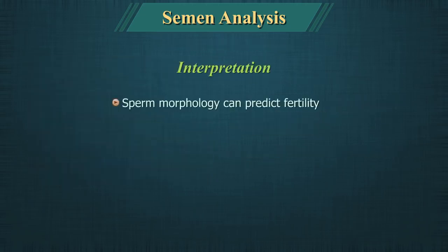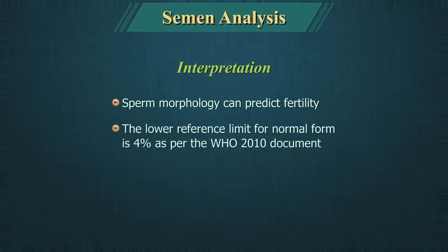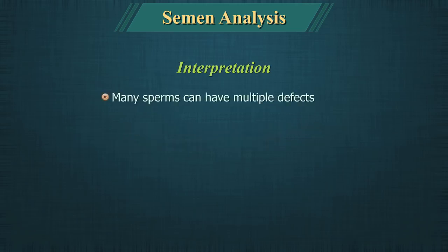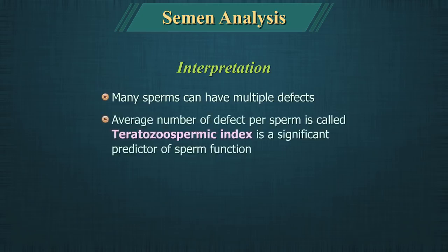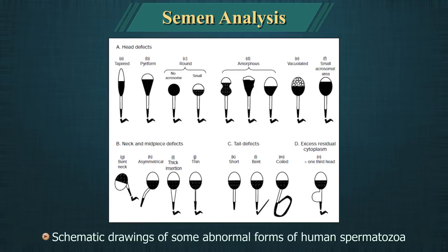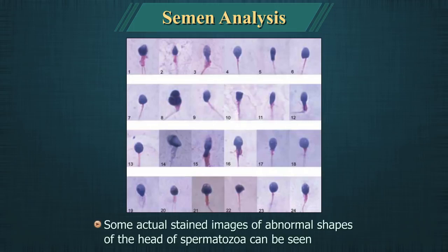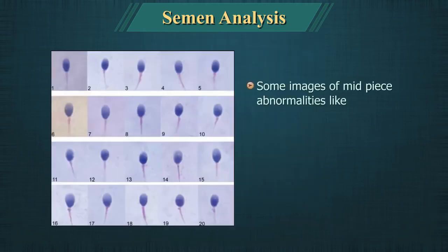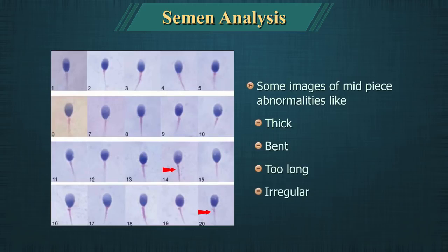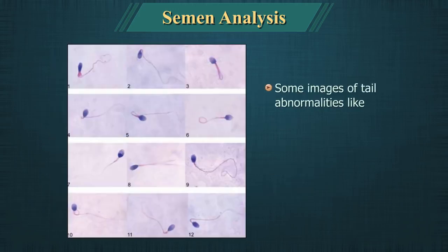The head should be smooth, regularly contoured and generally oval in shape. The mid-piece should be slender, regular and about the same length as the sperm head, with its major axis aligned with the major axis of the sperm head. The tail should be single, thinner than the mid-piece and approximately 10 times the head in length. The stained slide should be retained for 1 week. The lower reference limit for normal forms is 4% as per the WHO 2010 document. Many sperms can have multiple defects; the average number of defects per sperm is called the teratozoospermic index, which is a significant predictor of sperm function. Images of abnormal forms include head, mid-piece (thick, bent, too long or irregular) and tail abnormalities (double tail, looped, coiled, bent, etc.).